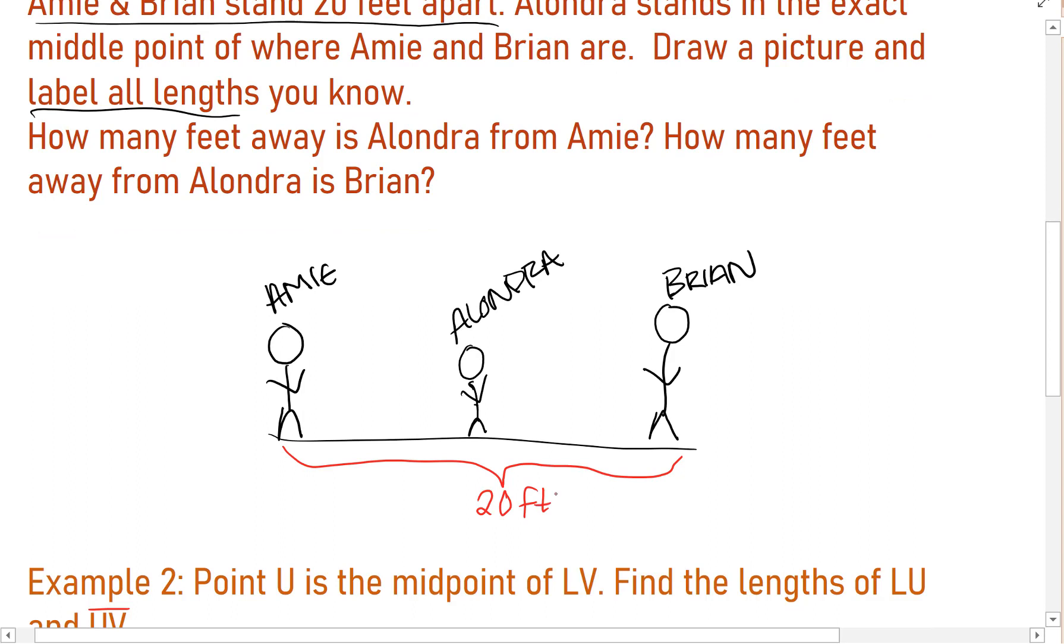Do I know any other lengths? Do I know the distance from Amy to Alondra and the distance from Alondra to Brian? Well, yes, I do. If she's in the exact middle, then she's halfway between them. So I just need to take the entire length, the entire distance and divide it by two to find these separate lengths. Amy stands 10 feet from Alondra and Alondra stands 10 feet from Brian because she's in the exact middle.